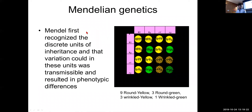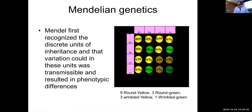Let's talk about Mendelian traits versus complex traits. Mendel was the first person to recognize discrete units of inheritance and that variation in these units was transmissible and resulted in phenotypic differences. He looked at combinations of traits using Punnett squares — depending on which alleles he inherited, the progeny ratios were predictable. From that he inferred his rules of genetics: independent assortment, which is always true except when things are linked, and the fact that units are discrete.